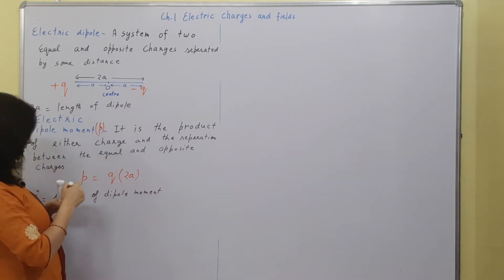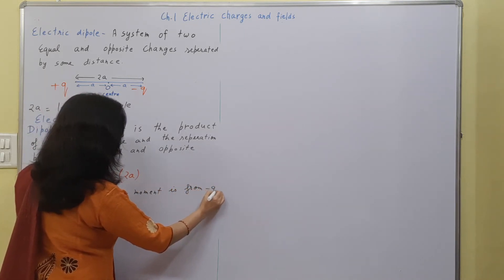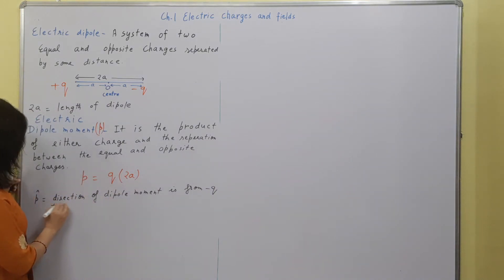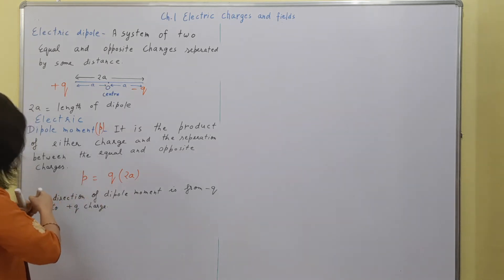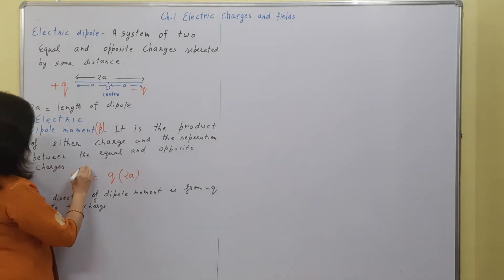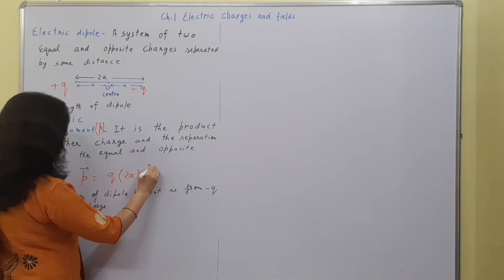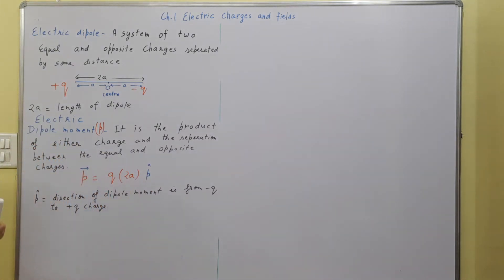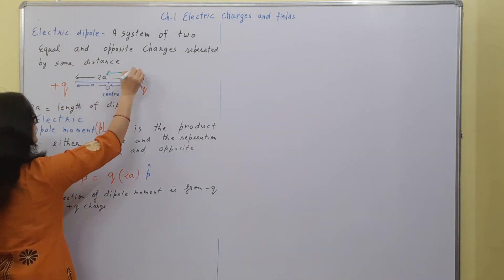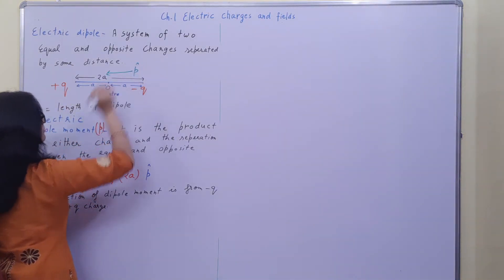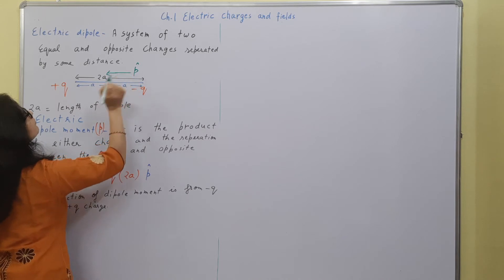The direction of dipole moment is from minus q to plus q charge. So we mention that this is a vector quantity where we write it as magnitude and p-cap as the direction. In this figure, the direction of the dipole moment will be towards the left side.